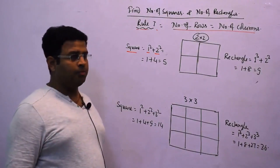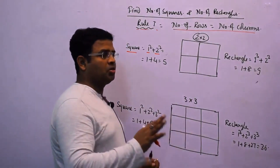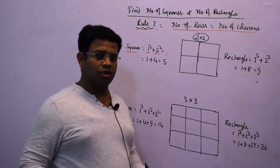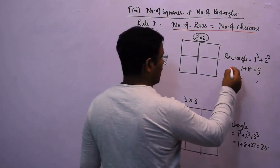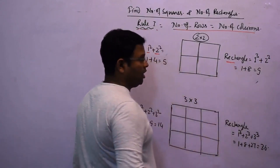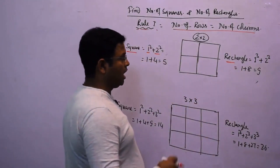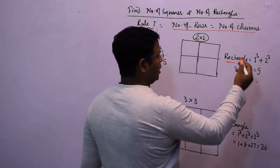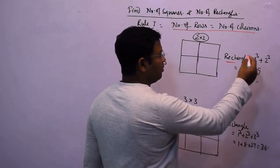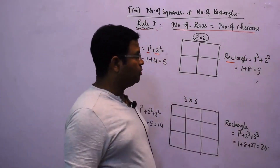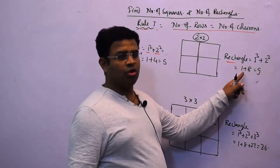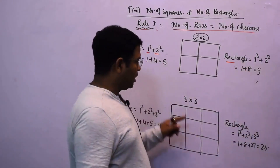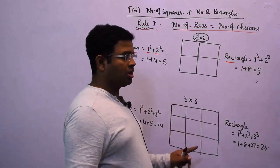The number of rectangles is always greater than the number of squares. To find the number of rectangles, use cubes instead of squares. For two rows and two columns: 1³ + 2³ = 1 + 8 = 9 rectangles.